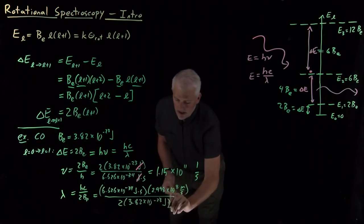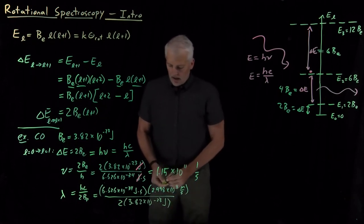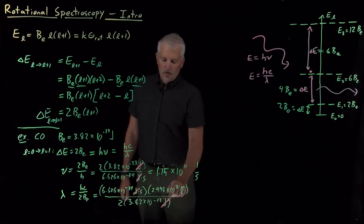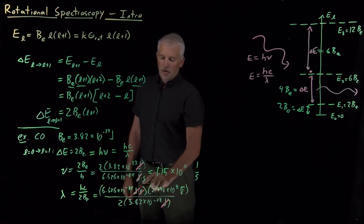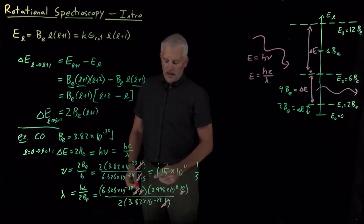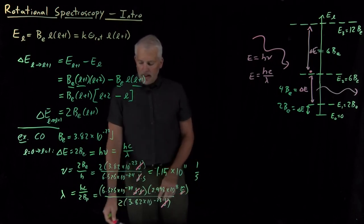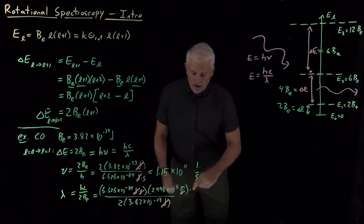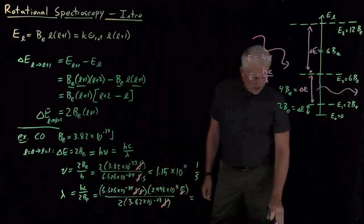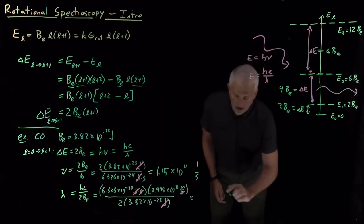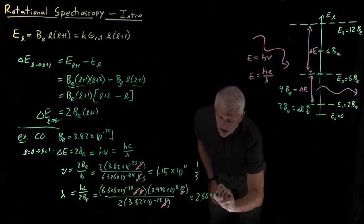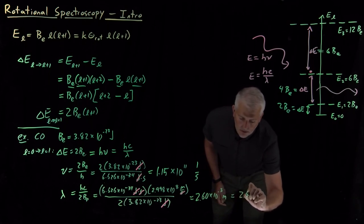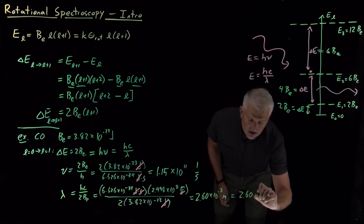The units in this case—again I've got joules from Planck's constant, which cancel joules in the rotational constant. Planck's constant has units of second, which cancel one over second in the speed of light. And the units I'm left with are just meters, which is correct for a wavelength. Numerically, that answer turns out to be 2.6 times 10 to the minus 3 meters, or if we prefer, 2.6 millimeters.